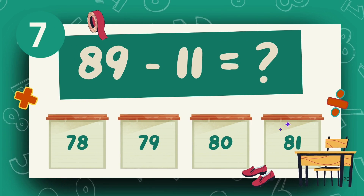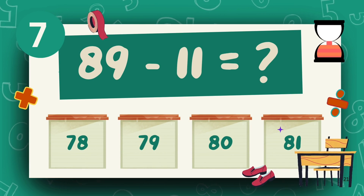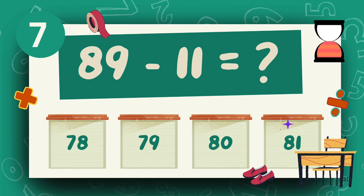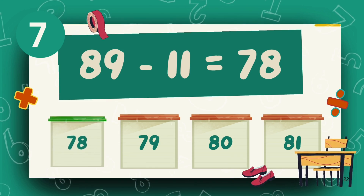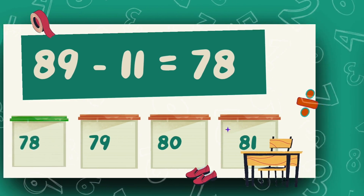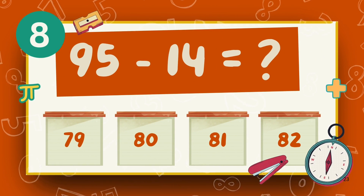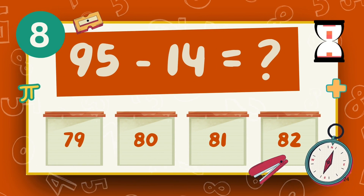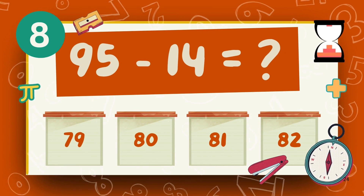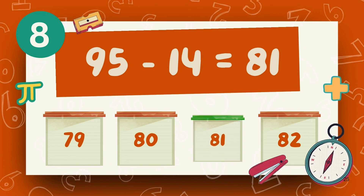What is 89 minus 11? The answer is 78. What is 95 minus 14? The answer is 81.